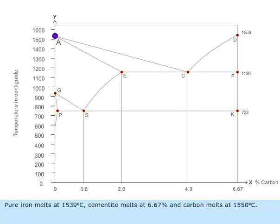Pure iron melts at 1539 degrees centigrade, cementite melts at 6.67 percentage, and carbon melts at 1550 degrees centigrade.